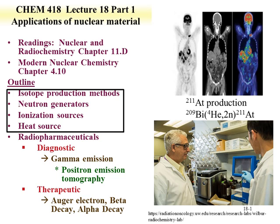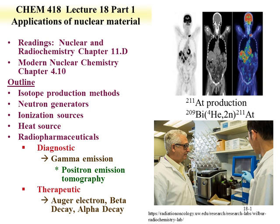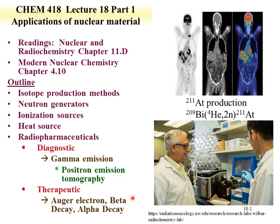The second part of the lecture is going to discuss radiopharmaceuticals, including diagnostic applications where gamma rays are used to determine the location of tumors or medically interesting objects in the body. This can include function versus positron emission tomography, where a positron emitter and the annihilation of the electron with the positron produce photons used to image reactions in the body. There are also therapeutic radiopharmaceuticals, including Auger electrons, beta decay, and alpha decay.